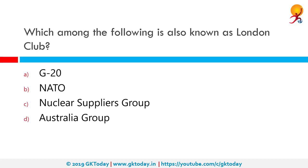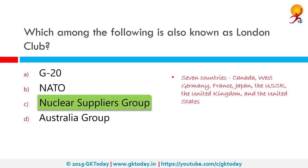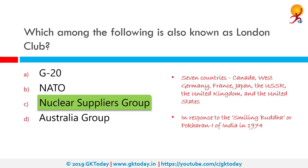Which among the following is also known as the London Club? The correct answer is the Nuclear Suppliers Group, which was formed by 7 countries: Canada, West Germany, France, Japan, the USSR, the United Kingdom and the United States. It was formed in response to India's Smiling Buddha or Pokhran I nuclear test in 1974.